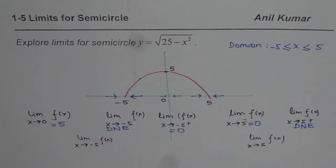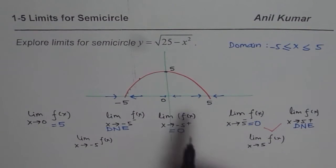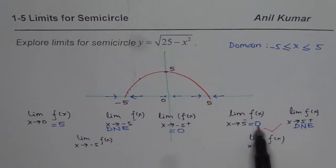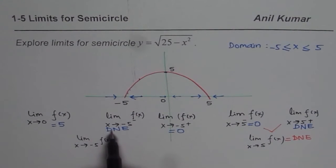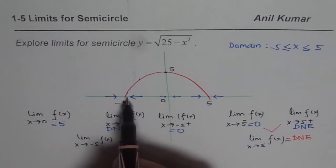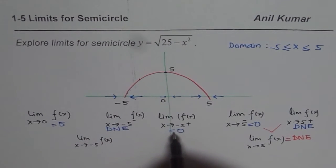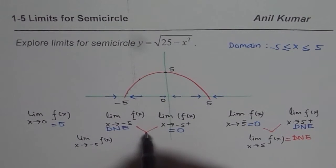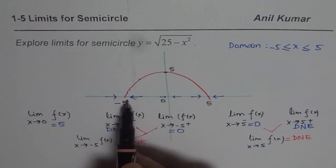Now we have to figure out what is the limit of the function when x approaches 5. You have to see the limits from both sides, and from both sides they are different — from the left it is 0, from the right it does not exist. So the limit at x=5 does not exist. Exactly the same thing happens at minus 5: the function is not defined from the left side, and it is 0 from the right side. So both limits are not the same, and the limit at x=minus 5 does not exist either.